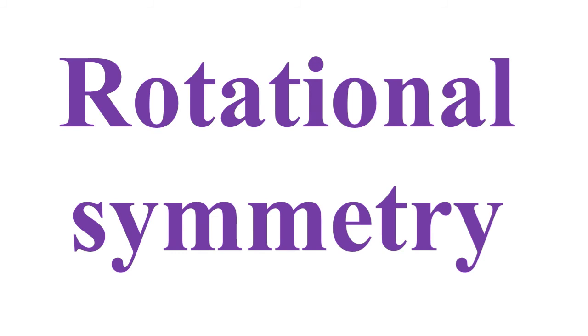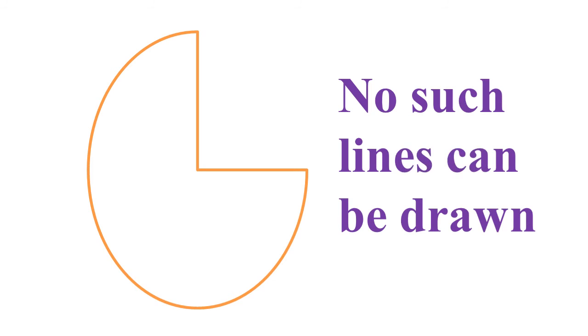We have another type of symmetry: rotational symmetry. To understand this, let's move into a figure. Look into the shape. Now tell me, if you draw a line, do the two parts match exactly? No, we can realize no such lines can be drawn. But the shape has rotational symmetry.